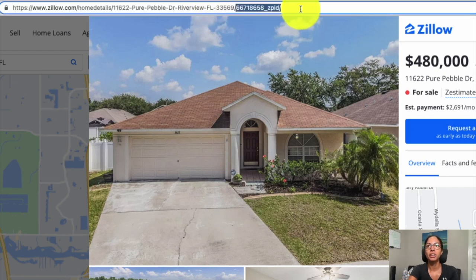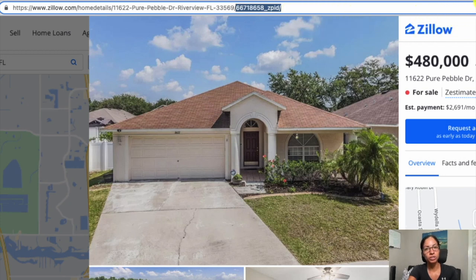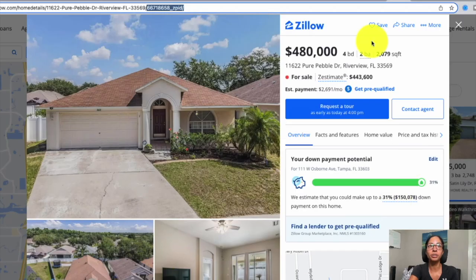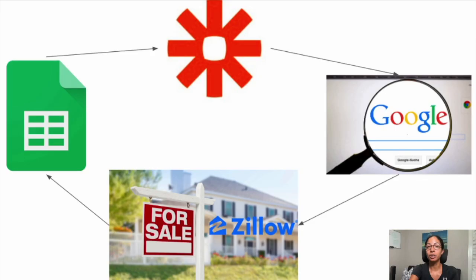We want to recreate that search flow automatically, so we're going to use a Google Search API to get the top search results, take the first one which is the Zillow home details page, and extract that ZPID. Once we have the ZPID we can feed it into the Zillow API, which returns structured data with all the information that's on Zillow right back within our spreadsheet.